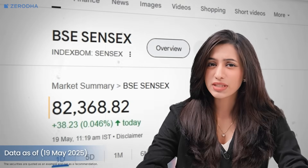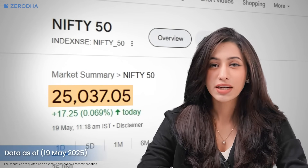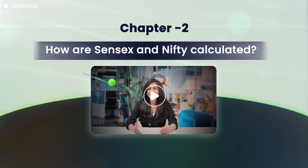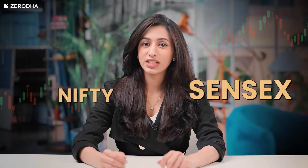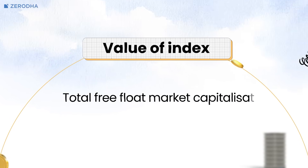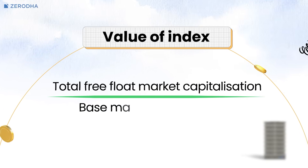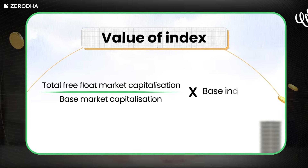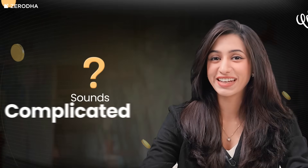But the numbers you see next to Sensex and Nifty aren't random — they're carefully calculated values. The formula to calculate both Sensex and Nifty is the same: Value of Index equals total free float market capitalization divided by base market capitalization, multiplied by base index value. Sounds complicated? Don't worry, we'll break it down step by step.